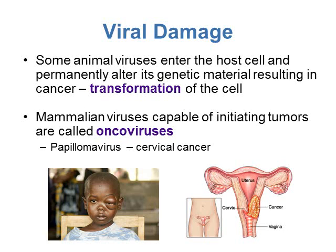Some animal viruses enter the host cell and permanently alter its genetic material, resulting in cancer — this is called transformation. Mammalian viruses capable of initiating tumors are called oncoviruses. One example is papillomavirus, which causes cervical cancer. There is now a vaccination available for this virus, linked to certain forms of cervical cancer, which was recommended for those who had not yet been sexually active.